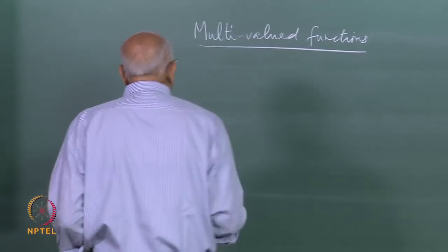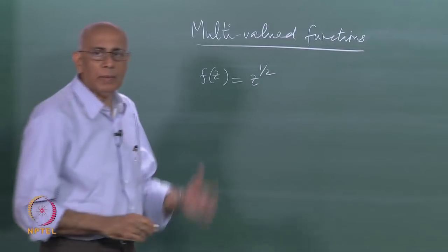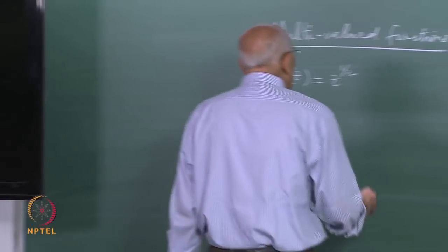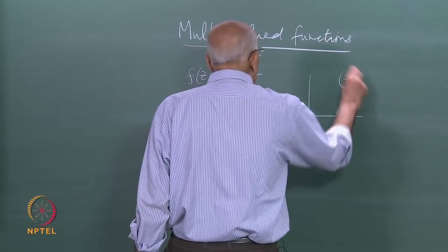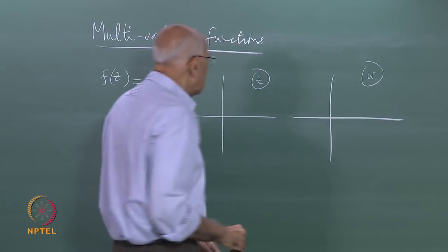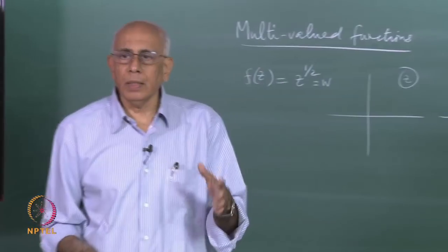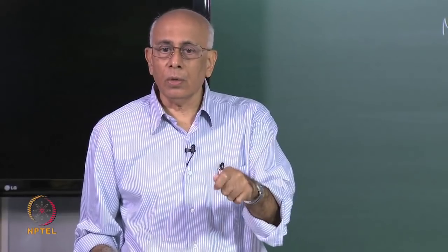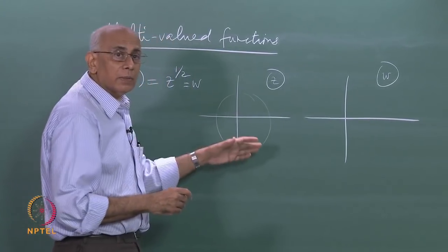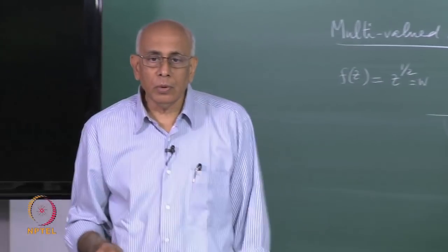Let us look at the simplest example: f of z equal to z to the power of half, the square root of z. The first problem that hits you right away is that as you go around in the z plane — calling this number w — since you take a square root, if z is some r·e^(iθ), then the argument of w is θ/2. This means that if you cover the entire z plane from 0 to 2π in argument, you are only covering the upper half plane in w, because the argument of w will not exceed π.